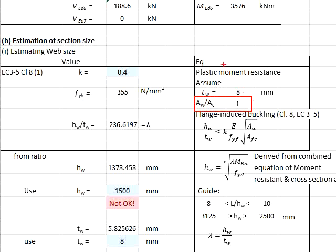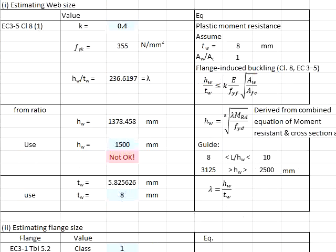In this case we need to assume a size of the web in terms of the thickness. Assume that the thickness of the web is 8mm. The ratio of hw/tw is computed by the equations given here. This represents the ratio lambda.